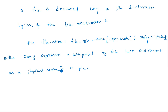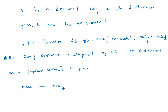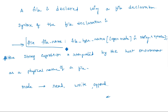The mode specifies which mode is being used — whether it is open for writing or reading. The mode may be read mode, write mode, or append mode. Append mode means joining with another file. These are the different file declaration modes and this is the syntax of the file declaration.